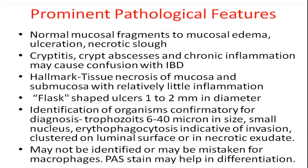Recapping the prominent histopathological findings of intestinal amoebiasis: mucosal fragments can be normal or show mucosal edema, ulceration, and presence of necrotic slough. Cryptitis and crypt abscesses along with chronic inflammation may be present, which can cause confusion with inflammatory bowel disease. The hallmark of amoebiasis is tissue necrosis of mucosa and submucosa with relatively little inflammation.